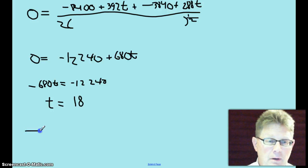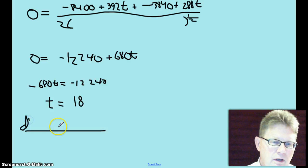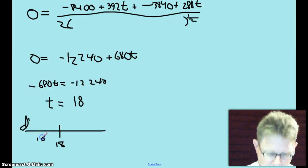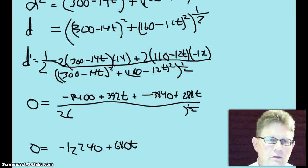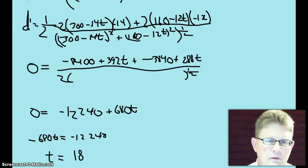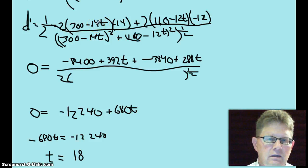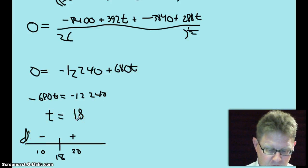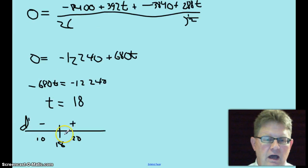Let's make sure that that is a minimum. d prime at 18. We'll pick 10 as a number, and when we do that the numerator would be negative 280... wait a minute. That will end up being a negative, and when you pick 20 it will end up being a positive, but you always have to confirm using a first derivative test that this is a minimum. It is a minimum.